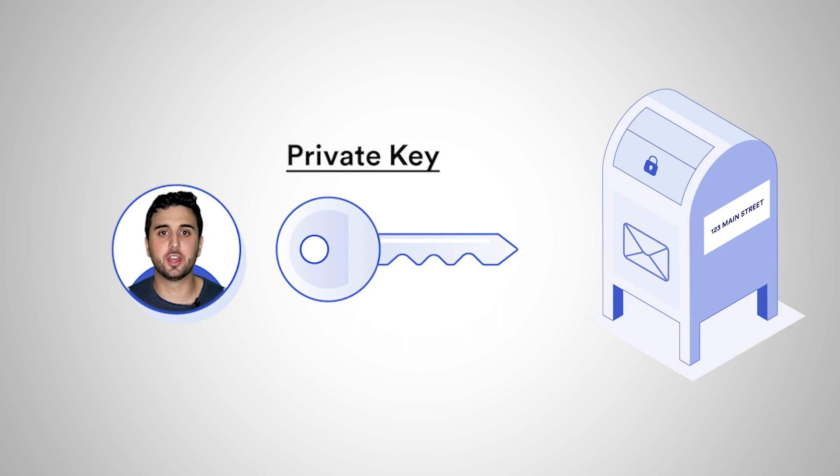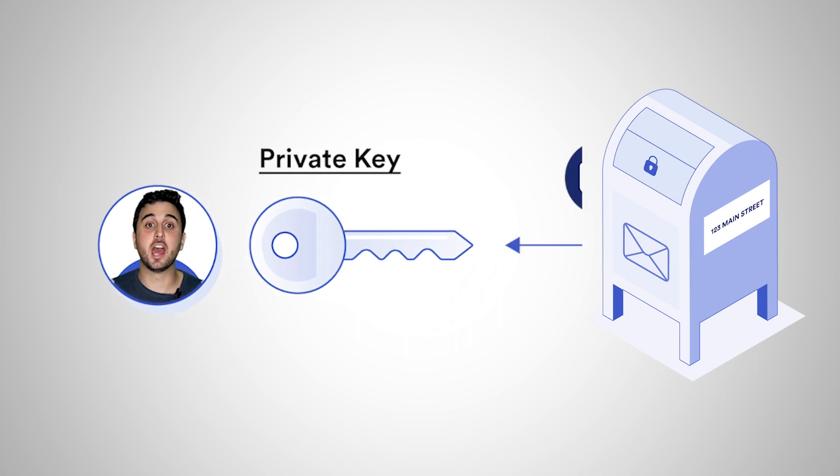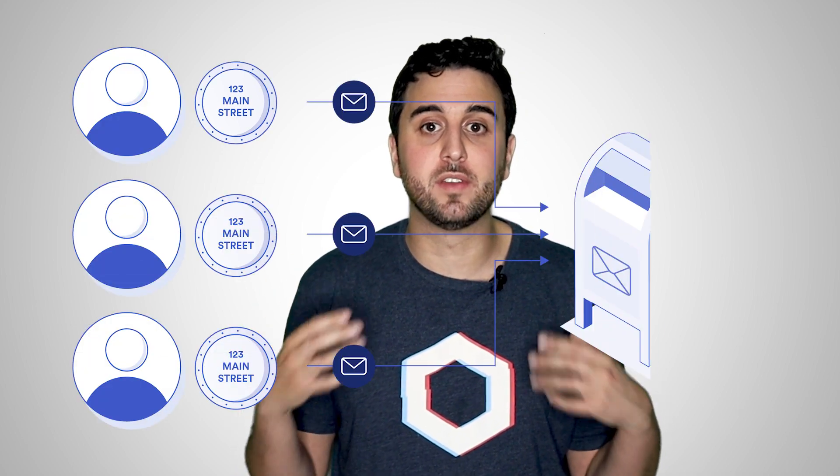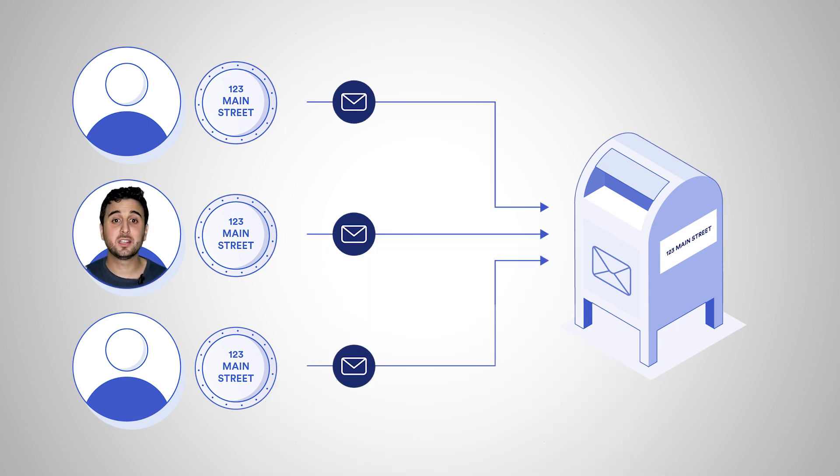To get an intuitive understanding of how asymmetric cryptography keeps messages private, imagine private key holders as owning a locked postage box with a public address. Only the private key holder can open the box with their key and read the messages within. You can imagine the public key as a token with the address of the postage box.